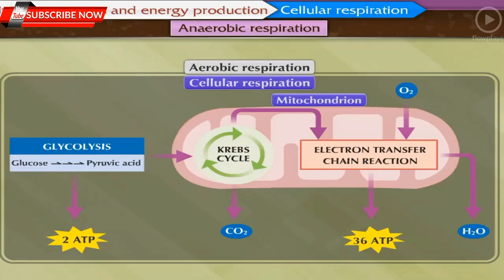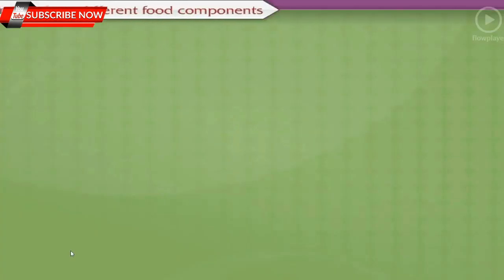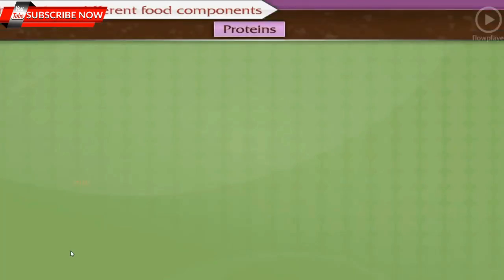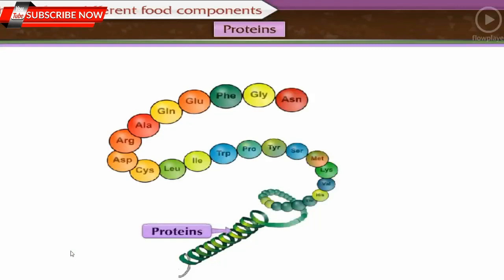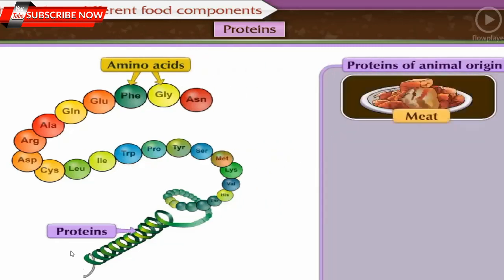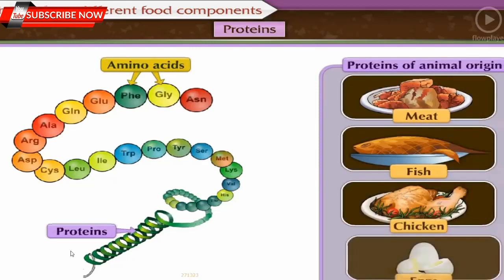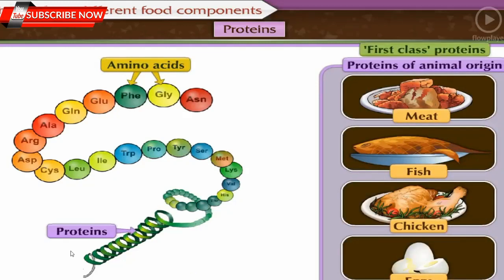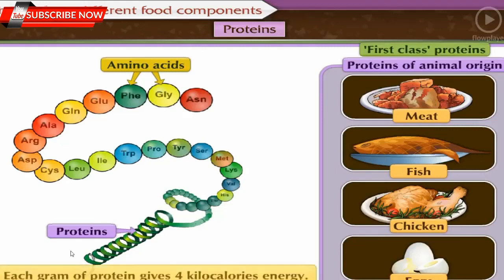After learning about energy production from carbohydrates, let us now learn about energy production from other nutrients. Proteins are macromolecules formed by bonding together many amino acids. Proteins of animal origin — meat, fish, chicken, eggs, etc. — are called first-class proteins. Each gram of protein gives us 4 kilocalorie energy.